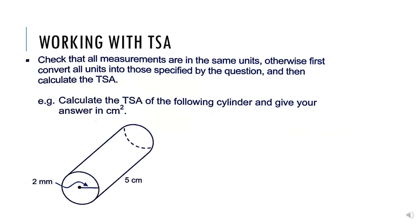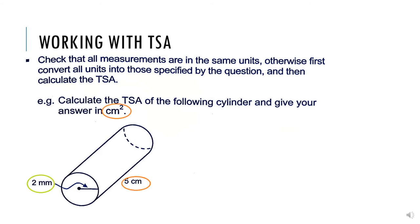We must check that all the measurements are in the same units before we calculate our final answers. Otherwise, first convert all the units into those specified by the question. If the question wants centimeters squared, you will convert all the units on the cylinder to centimeters. You'll see that the radius is given as 2 millimeters, and we want the final answer in centimeters squared, so we convert 2 millimeters to centimeters by dividing by 10. Once your units are converted as specified by the question, then we can calculate the total surface area.